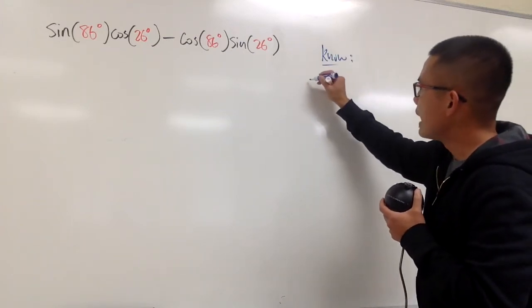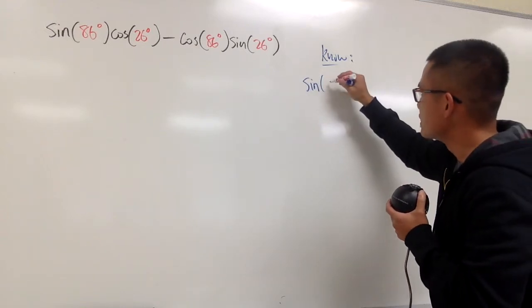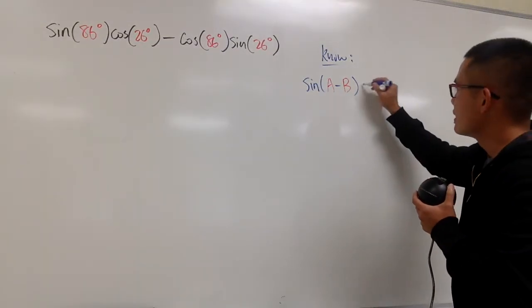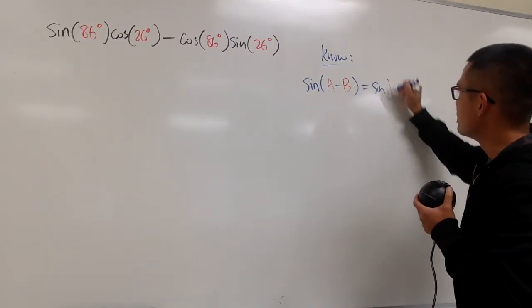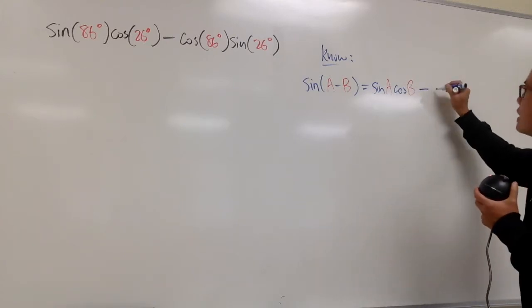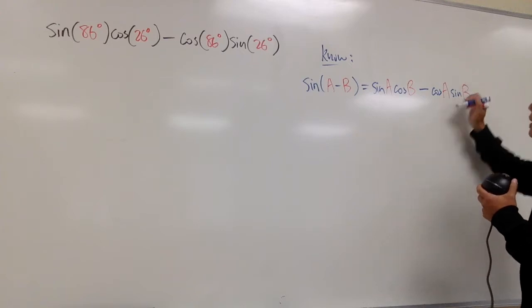So we know that if you have sine of the difference of two angles, I'll put this down as sine of A minus B, this is going to be sine of A times cosine of B, and then minus cosine of A times sine of B.